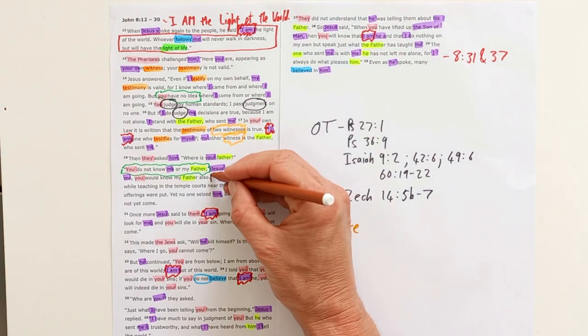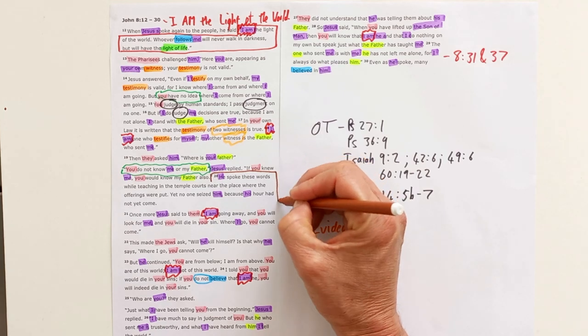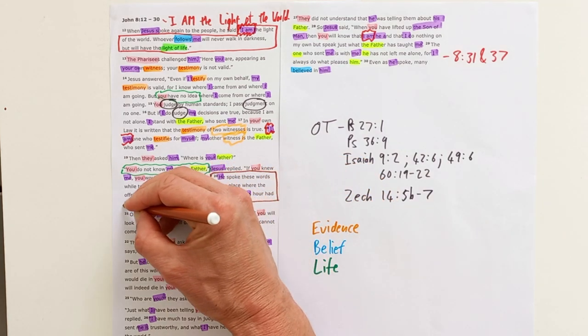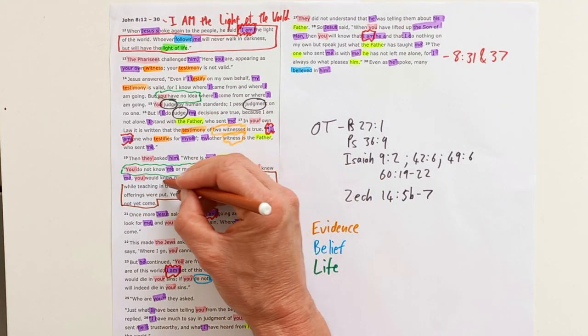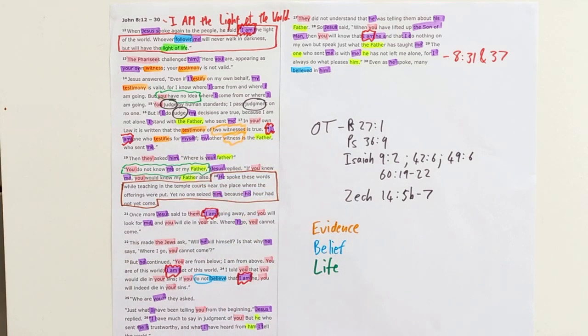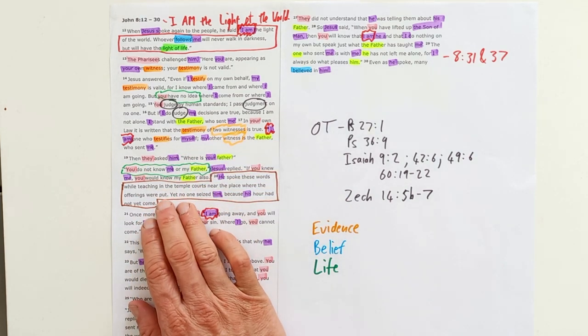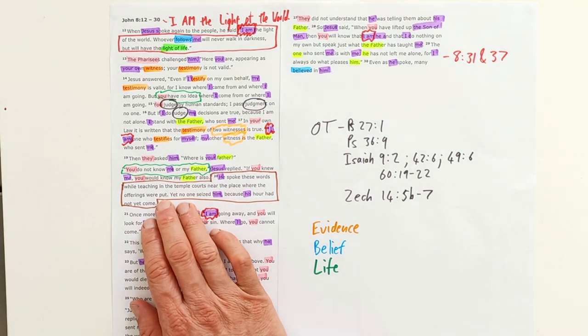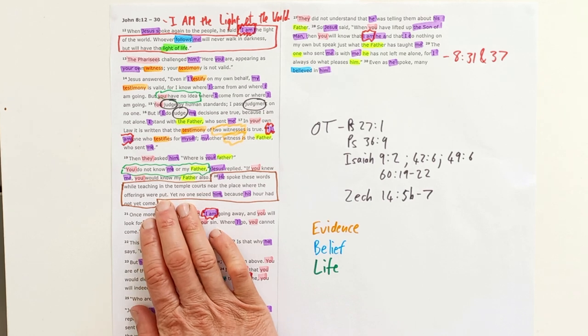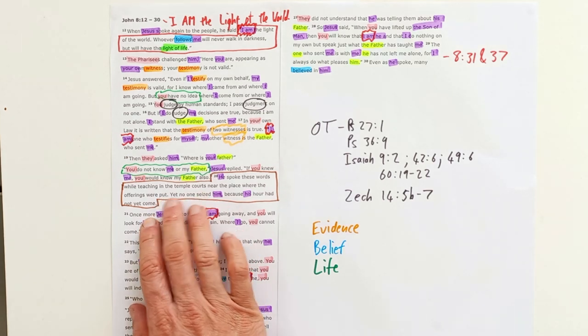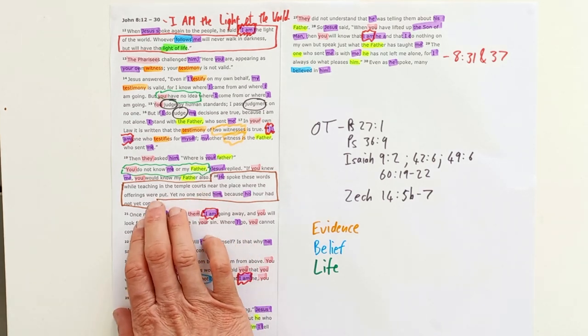John gives us this little bit of information as the author, saying that Jesus spoke this while teaching in the temple courts near the place where the offerings were put. So as I said just now, this was taking place on the greatest final day of this festival when these massive lights were lit.